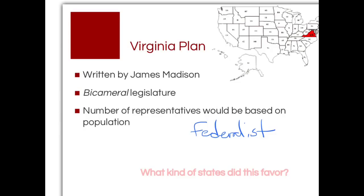Madison believed the Tenth Amendment — which gave states all powers not granted by the Constitution — was the wrong approach. He felt the federal government should have those powers instead. The Virginia Plan called for a bicameral legislature, meaning two chambers of Congress. For both chambers, he wanted representatives based purely on population. This would favor states with large populations — the bigger your state, the more you'd benefit from the Virginia Plan.